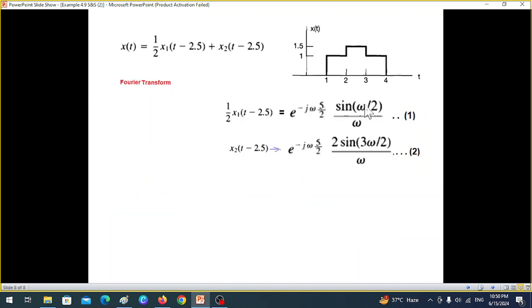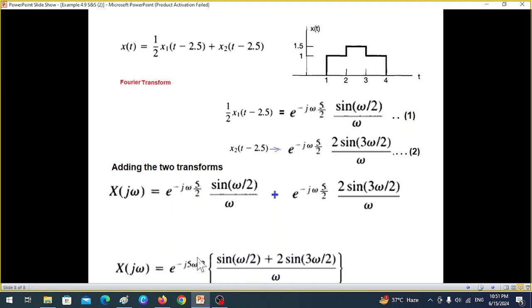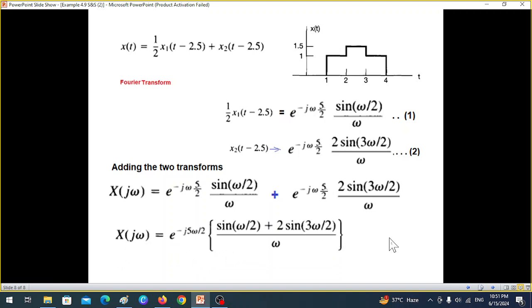So we have got these two equations. This is for the first part, and this one is the second part. Adding the two will get the complete Fourier transform. If you want, you can take e^(-jω5/2) common from both of them. So this will be the final answer. I hope you have been able to follow this. Please let me know through your comments. Share it with your friends. Thank you.